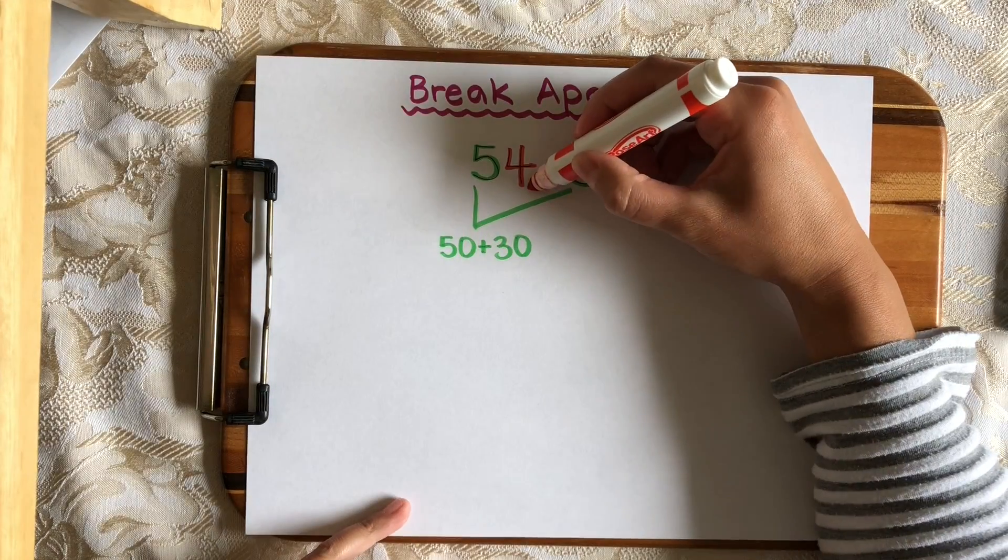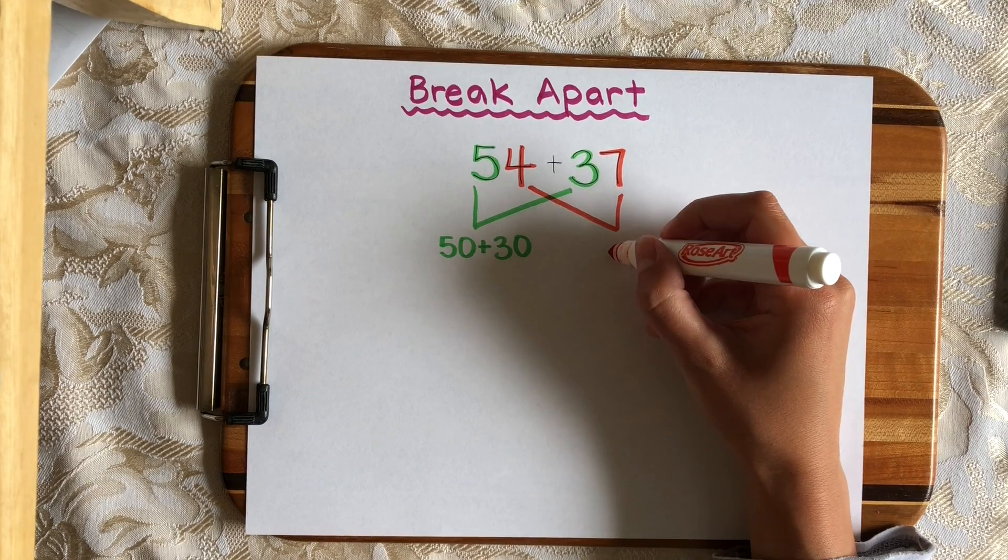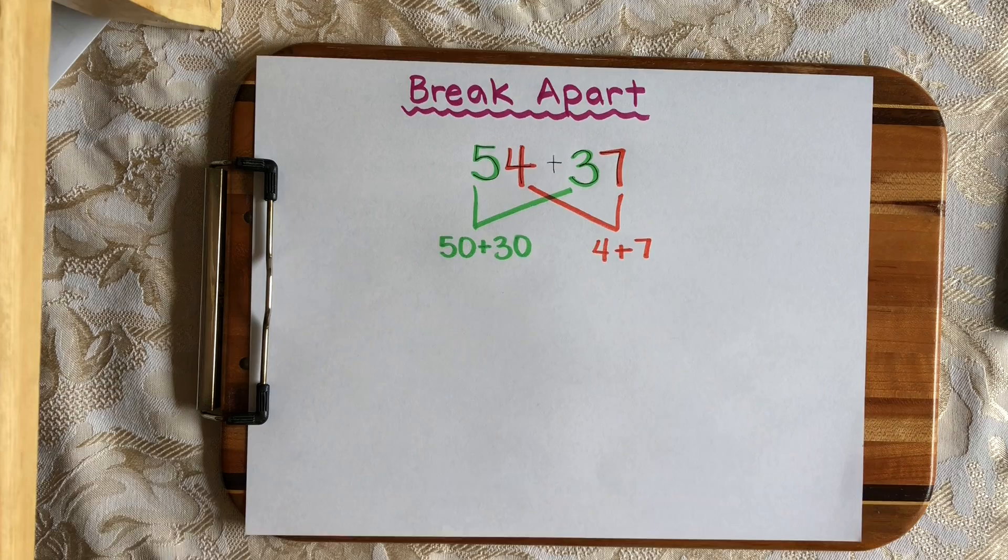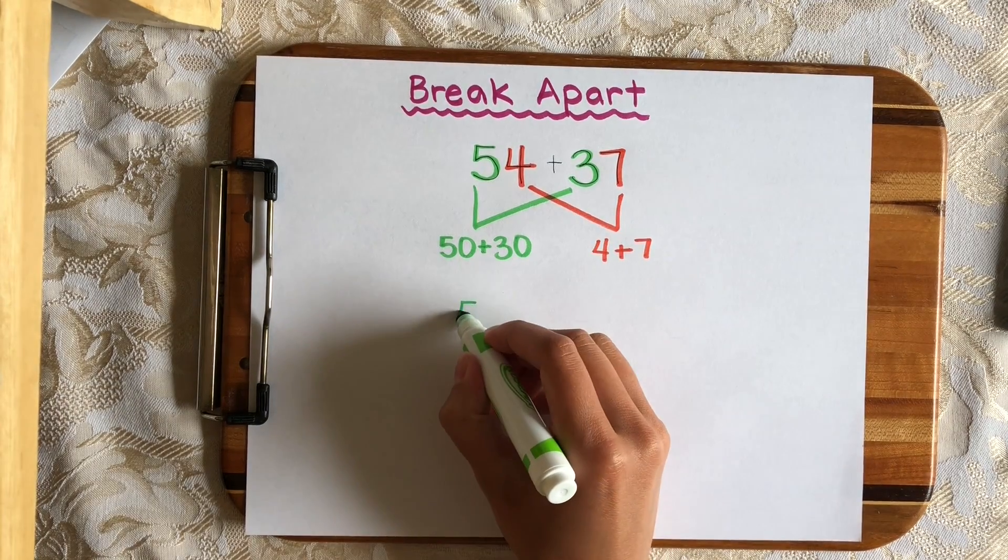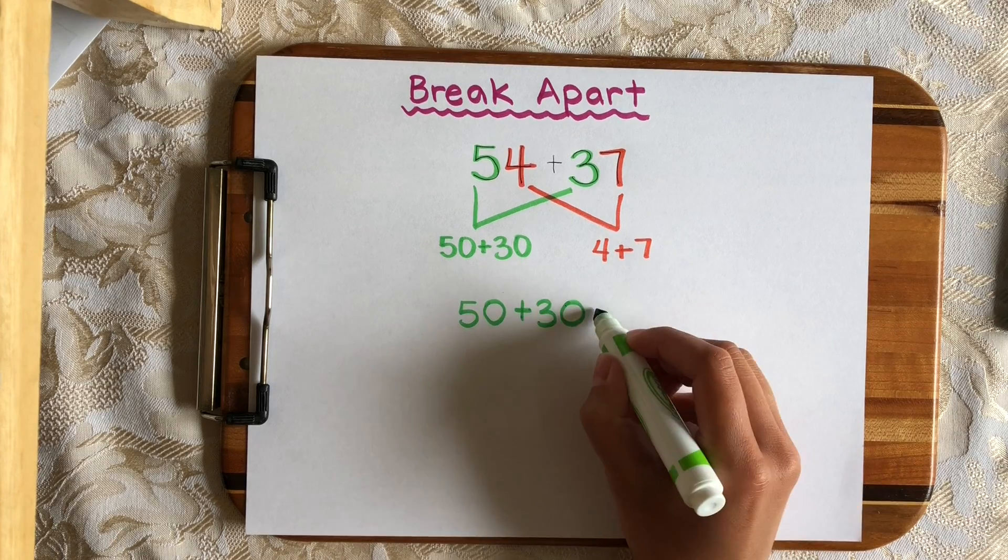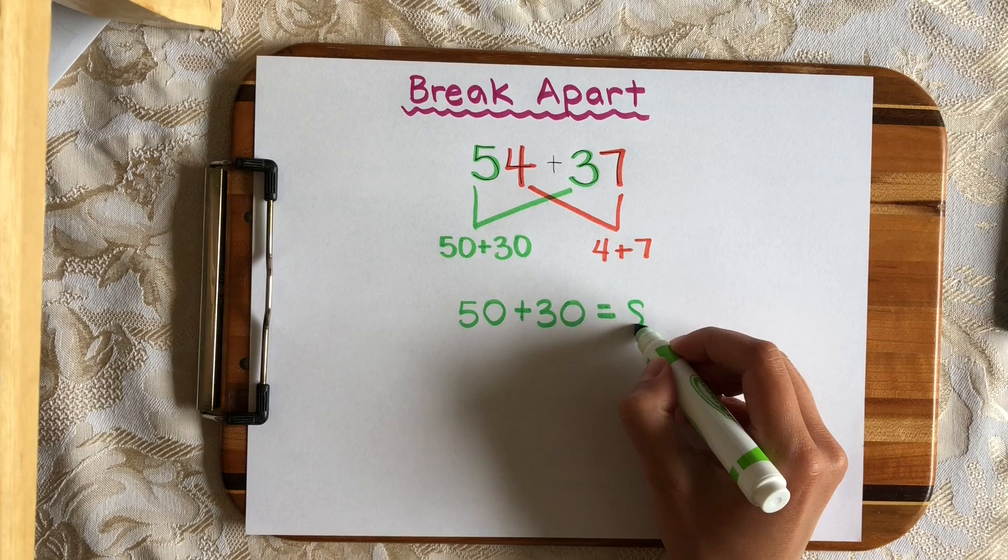And let's bring together our ones over here. The digits are 4 and 7, but their values are just 4 and 7. 4 plus 7. Now I'm going to rewrite my sentences down here to make it a little bit more clear. First, I'm going to solve 50 plus 30. That's 5 tens plus 3 tens, which is 8 tens, or 80.